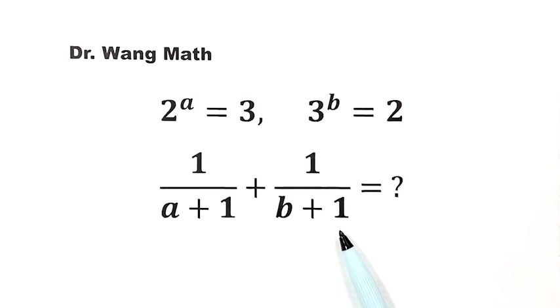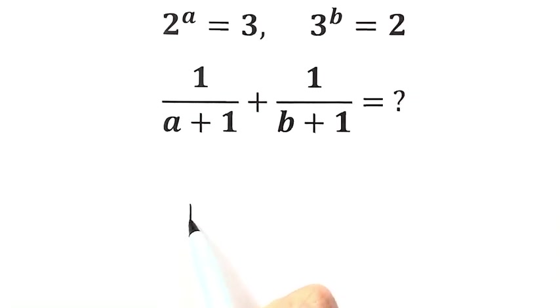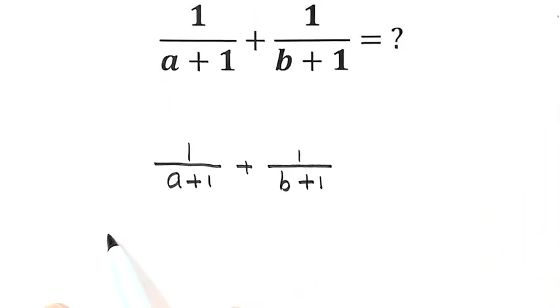Then how to solve it? Let's start from this expression: 1 over a plus 1 plus 1 over b plus 1. First, let's combine the two fractions into one by doing the common denominator.